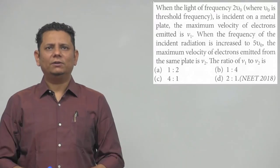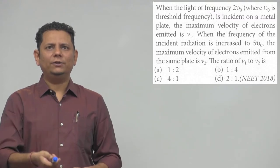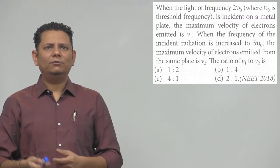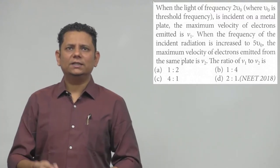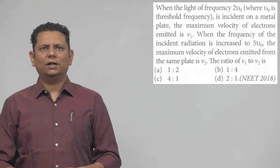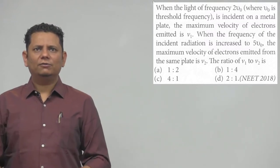Next question says when the light of frequency 2ν₀, where ν₀ is the threshold frequency, is incident on a metal plate, the maximum velocity of electrons emitted is V₁. When the frequency of